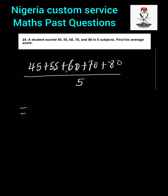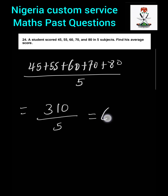Adding the scores: 45 plus 55 is 100, plus 60 is 160, plus 70 is 230, plus 80 is 310. Then 310 divided by 5 — 300 divided by 5 is 60, and 10 divided by 5 is 2 — so the average score is 62.